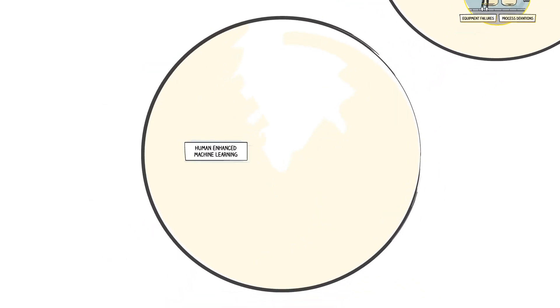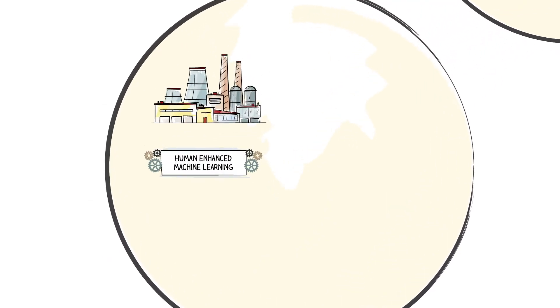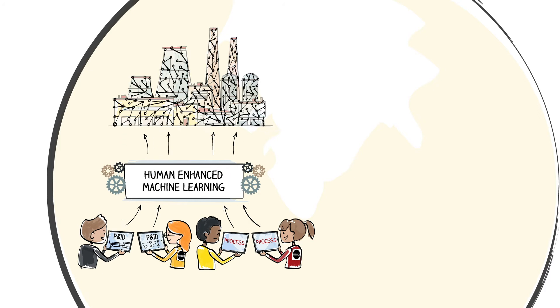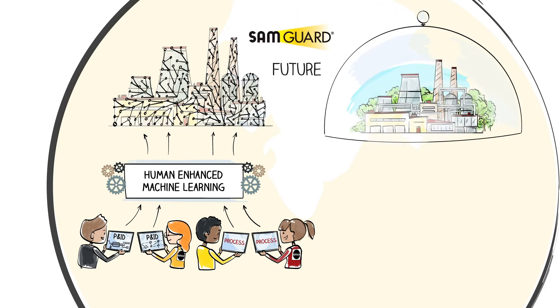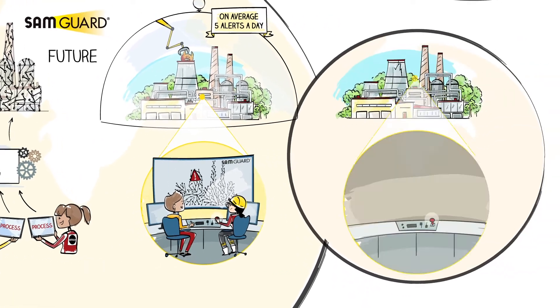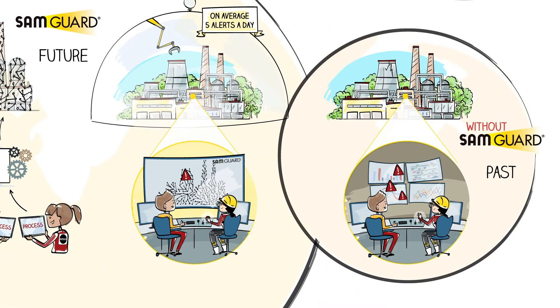Our patented human-enhanced machine learning adds context by combining your existing plant operational data with its structure and processes to achieve a unique analytical monitoring solution. Thanks to that, SamGuard generates just an average of five accurate and actionable warnings per day for the entire installation, eliminating frustrating alerts and the resulting alert fatigue.